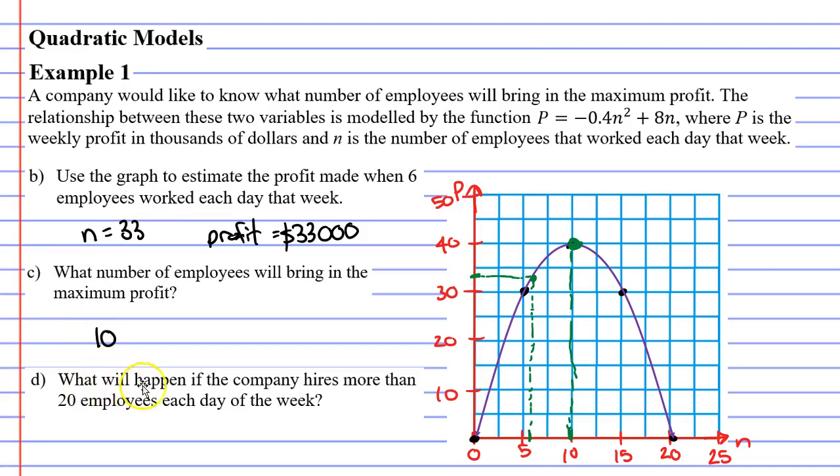Question D now, what will happen if the company hires more than 20 employees each day of the week? So what happens when they go beyond the 20? Well, looking at our parabolic curve, it's actually going to head into the negatives. So if they hire more than 20 employees, they're going to make a negative profit or a loss. So right down here for question D, they will make a negative profit or a loss.